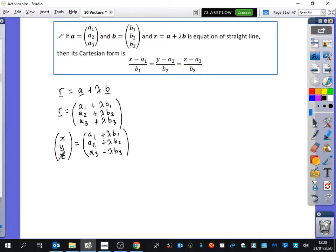And then we're going to do the same thing we did before. We're going to look at the i component, then we'll look at the j component, then we'll look at the k component. So the i component says that x is equal to a1 plus lambda b1. Obviously, the j component says y equals a2 plus lambda b2. And the k component says z equals a3 plus lambda b3.